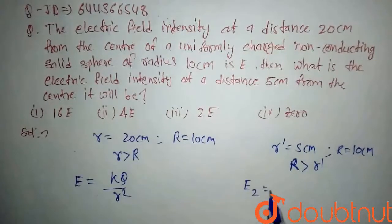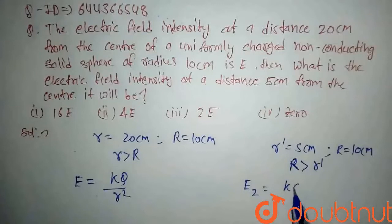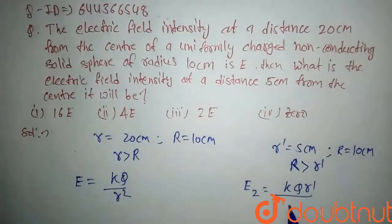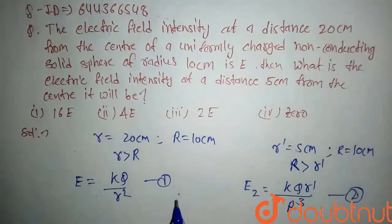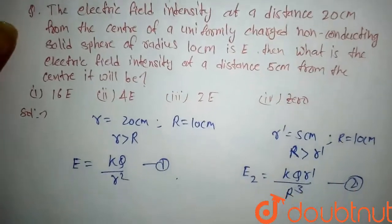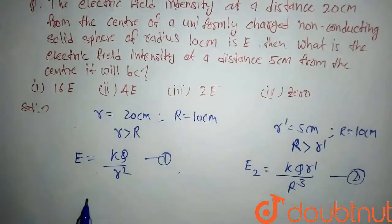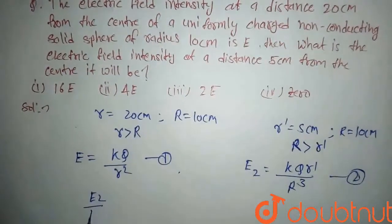So for inside of the non-conducting sphere, the electric field intensity is given by, let's say it's E2, it is given by kQ r dash upon capital R cube. So let's say this is equation second; this is first. If you divide equation second by first, then we will get E2 upon E...